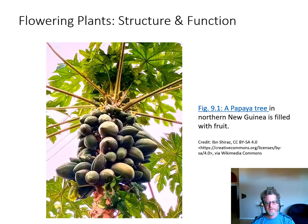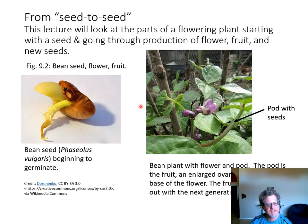Hi, this is Peter Brown from Bio 108. We're going to talk about flowering plants and their structure and function. Here's a papaya tree — papaya trees are flowering plants and you can see it's producing all these papaya fruits. This lecture is going to go from seed to seed: how a flowering plant starts out as a seed, then flowers and produces fruit, and inside the fruit are seeds as well.